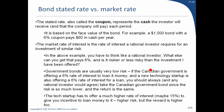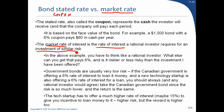The bond stated rate versus the market rate. The stated interest rate — also called the coupon — represents the cash the investor will receive and the company will pay each period, based on the face value. A $1,000 bond with a 6% coupon pays $60 in cash per year. The market rate of interest is the rate a rational investor requires for an investment of similar risk. We should think about what else we can invest in that pays 6% — is it riskier or less risky?